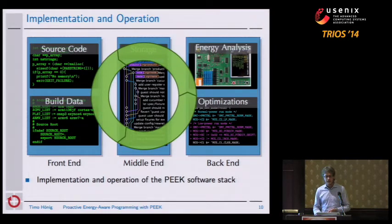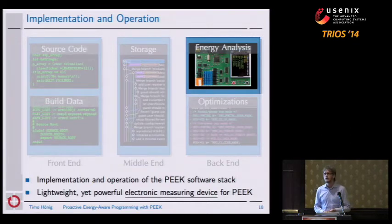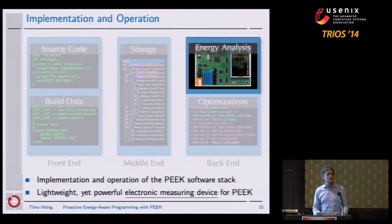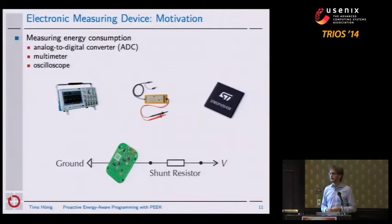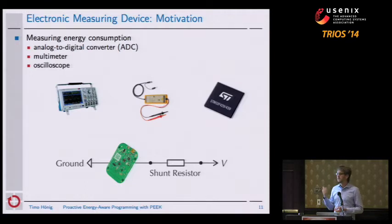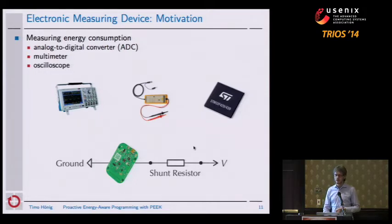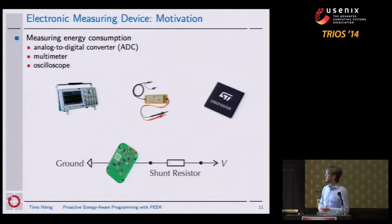In addition to the software stack, we also implemented a lightweight, fully automatic energy measurement device. I'll give a quick motivation for why we chose to implement a new energy measurement device. If we look at today's best practice — the hardware measurements available to developers — they either use an oscilloscope, multimeter, or ADC to actually measure the voltage drop across a shunt resistor. The voltage across a shunt resistor can be calculated to determine the energy or power demand of the device under test. This is the best practice currently carried out for electronic energy measurements.